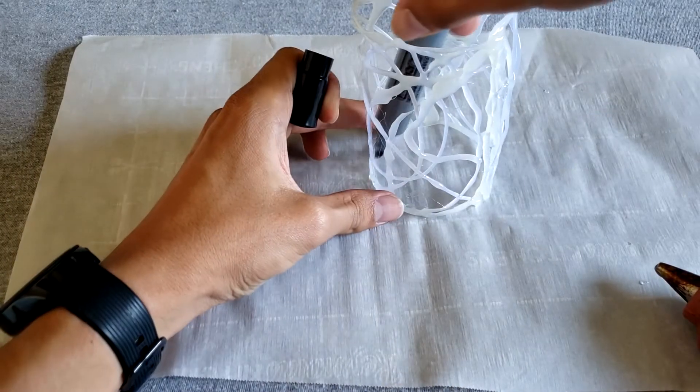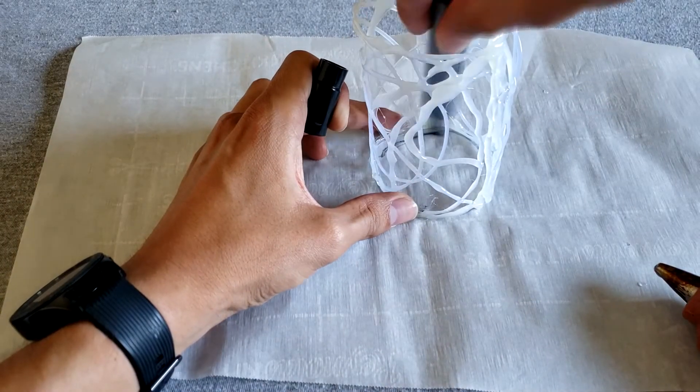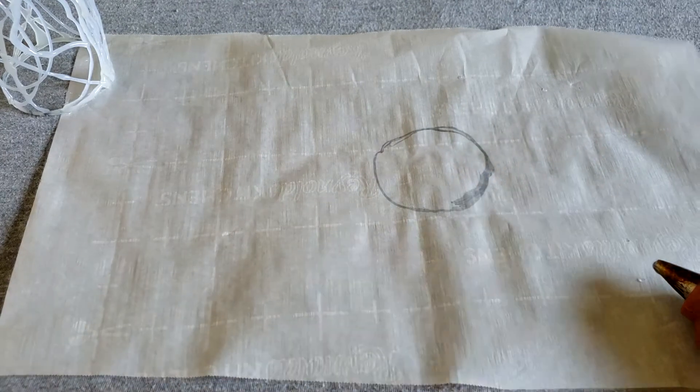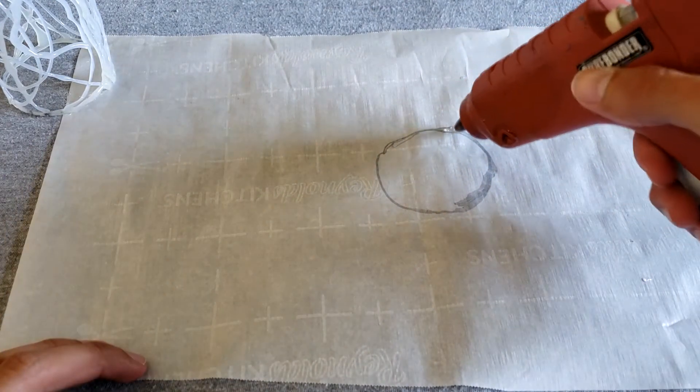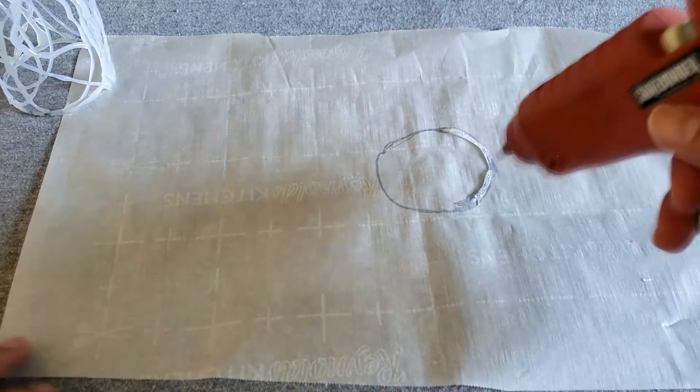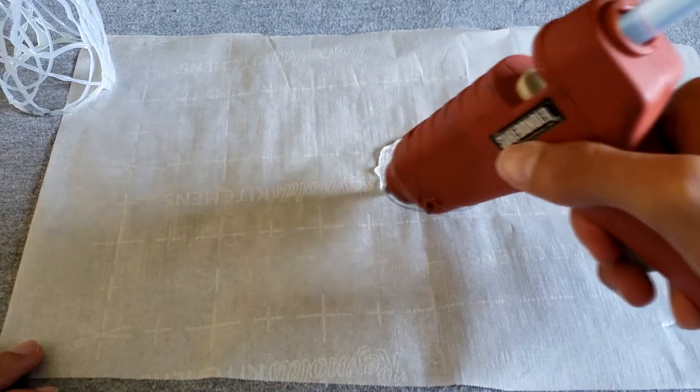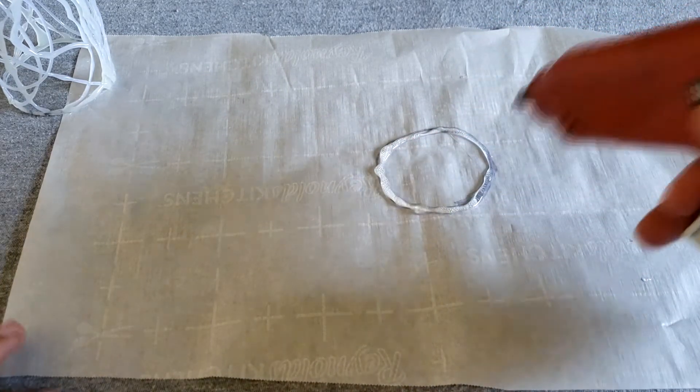Once we've completed that step, we're going to grab a marker or a pen and trace the bottom of our candle holder. Now with our hot glue, we're going to go over the design and then fill it in. This is where our candle is going to go.